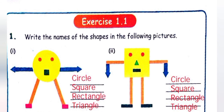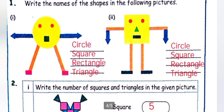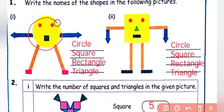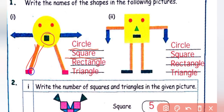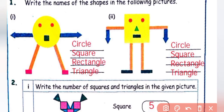Next, exercise 1.1 — write the names of the given shapes in the following pictures. Look at which shapes are used and write their names. The first picture is a circle, so you write circle here. You can write square here. The next shape name is square.